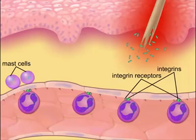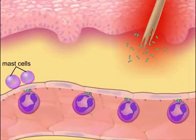This accumulation of neutrophils along the walls of the capillary is referred to as margination.